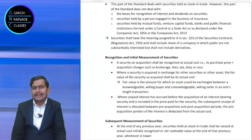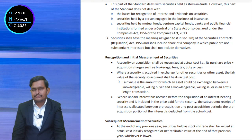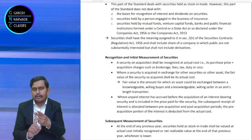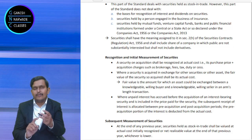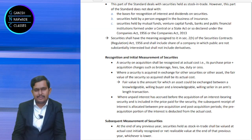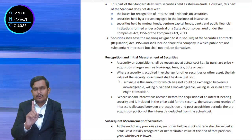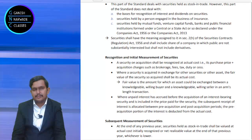For initial recognition, ICDS says that securities should be measured at cost. The cost is the purchase price. If you pay any brokerage during the purchase, that brokerage should be added. If you are paying any taxes — like when we buy on stock exchange, we pay Securities Transaction Tax. So remember three things: purchase price, brokerage, and taxes. These three should be added to arrive at the cost, and initially the security should be recognized at actual cost.